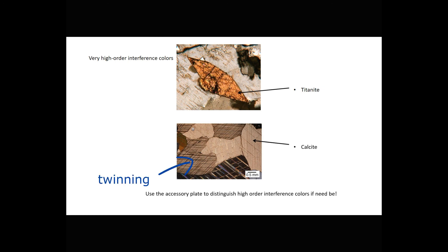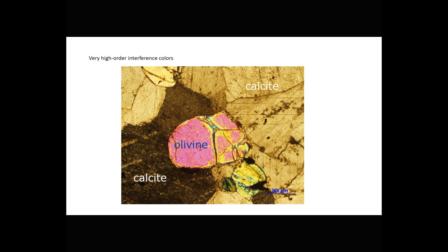One important diagnostic feature for calcite is twinning. You can see it here in this cross-polarized view as diagonal intersecting lines and stripes. Sometimes the twinning is visible in plain polarized light as well. We saw this view just a minute ago when we were talking about olivine — the grain in the center is olivine, but most of the material around it is calcite. You can see vague twinning in these grains, but seeing interference colors requires a very active imagination.